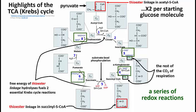And the second place is actually in step 5. The energy to form the GTP in higher organisms, or the ATP in bacteria, comes from the hydrolysis of a thioester linkage.